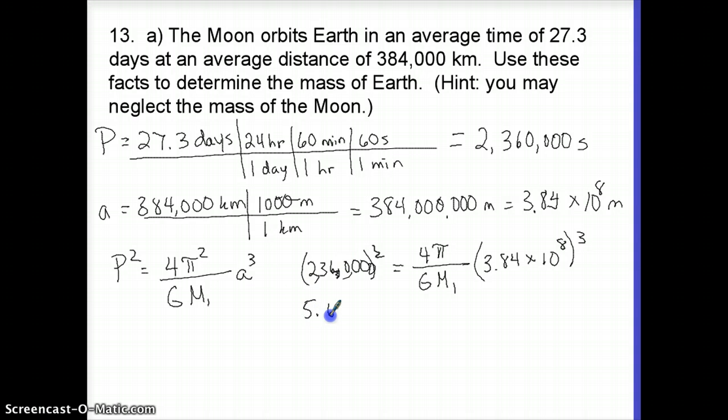Which is about 5.6 times 10 to the 12th. I'm now going to do 4 pi squared over G, which gives me about 5.9 times 10 to the 11th over M1. And then this big thing is 5.6 times 10 to the 25th.